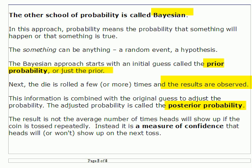Instead of saying it's the probability that if you roll that die an infinite number of times, two will show up one-sixth of those times — instead, it gives you a measure of confidence, a probability that you might know what's going to show up next.